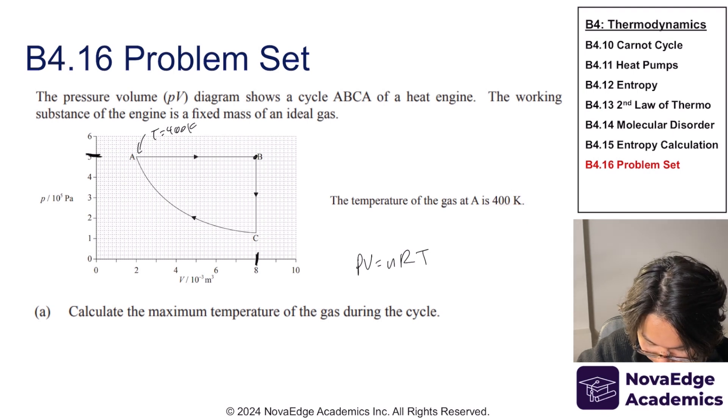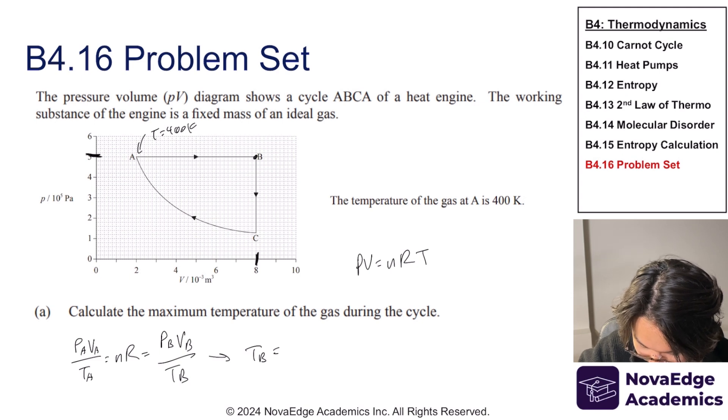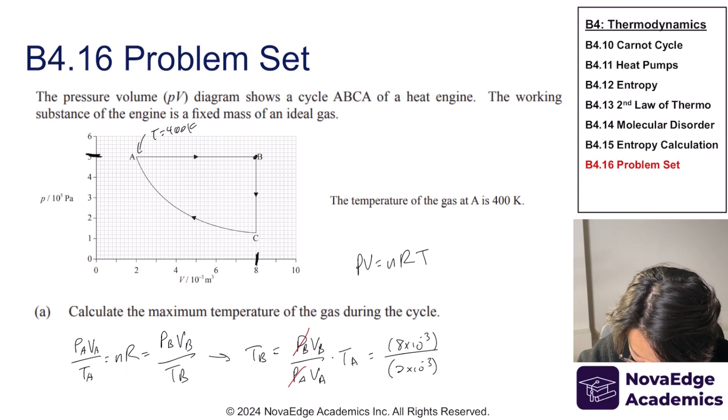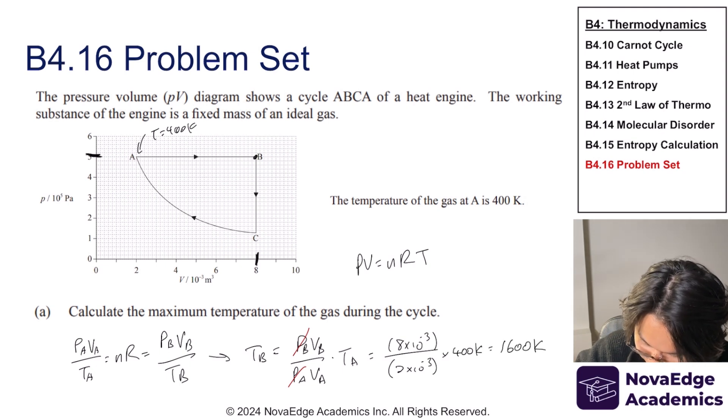But we do know the temperature of 400, so we can actually correlate using this. So we know that P_A V_A over T_A is equal to NR, right? And this also has to equal to P_B V_B over T_B. So if I just isolate T_B, then I get P_B V_B over P_A V_A times by T_A. By the way, P_B and P_A are the same because they are isobaric process. And plugging in these values, I don't even need a calculator for this. This is just 1600 Kelvin. I hope you got the same thing.